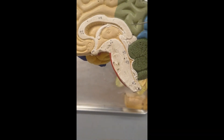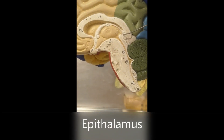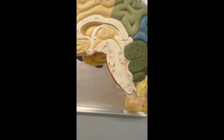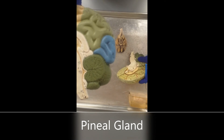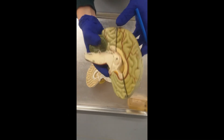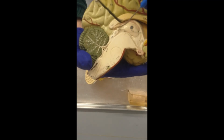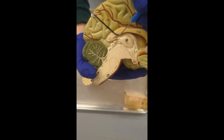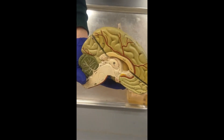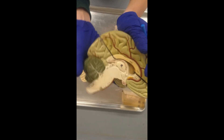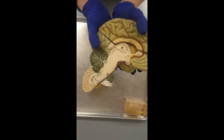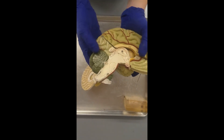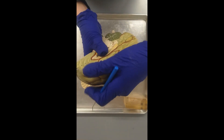The epithalamus — 'epi' means above. What we're looking for here is the pineal gland, or pineal body. This is what people refer to when they say 'open your third eye' or 'decalcify your pineal gland.' This is very important in your circadian rhythm and your sleep-wake cycle — it produces melatonin to regulate your circadian rhythm.